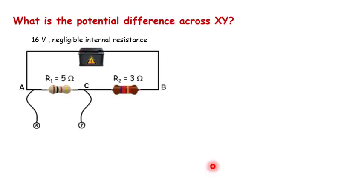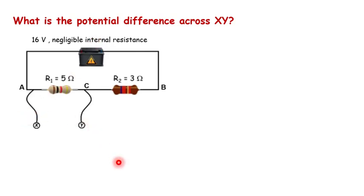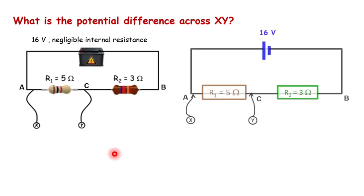Before we look at how the potentiometer works, let us look at this question. Given a cell of 16 volts with negligible internal resistance, can you find the potential difference across XY? To do that, we should first draw the circuit diagram.